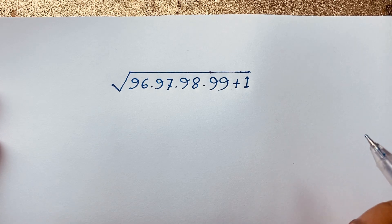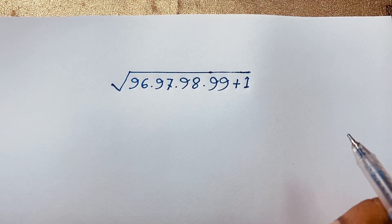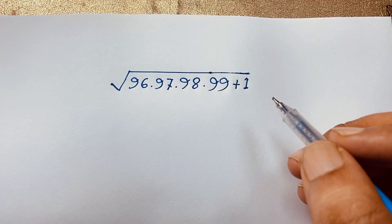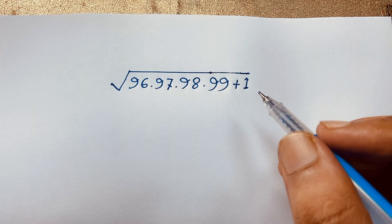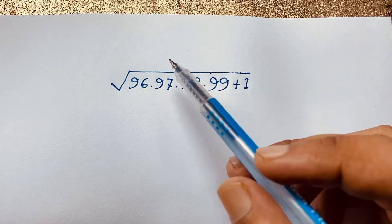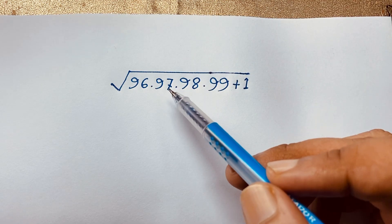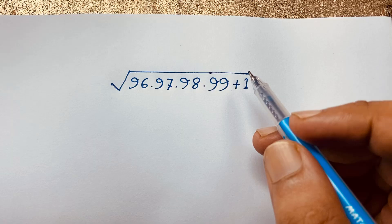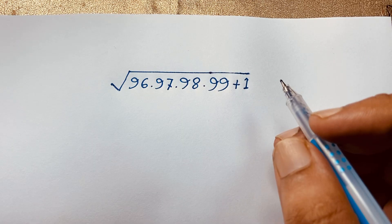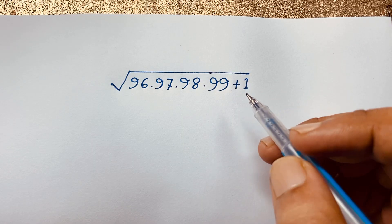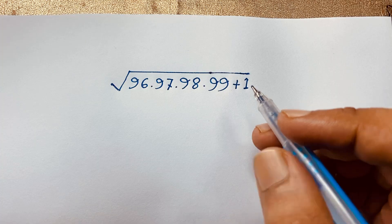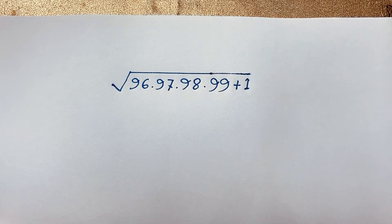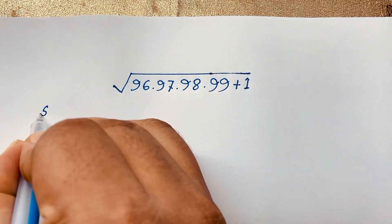Hello everyone, welcome to Russia's Classroom. Today we are solving an interesting viral Math Olympiad question. We will solve this question without a calculator: the square root of 96 times 97 times 98 times 99 plus 1. What does this equal? How do we simplify this square root math problem?